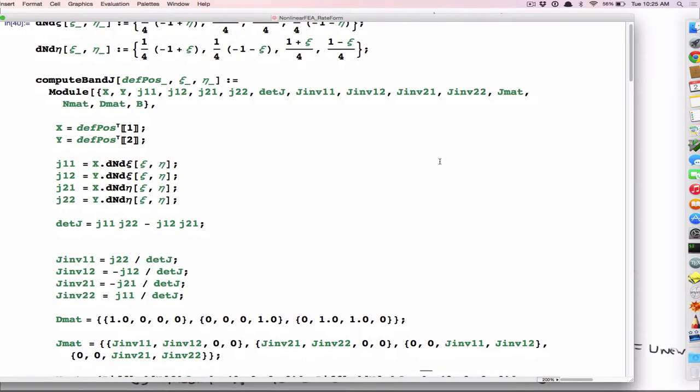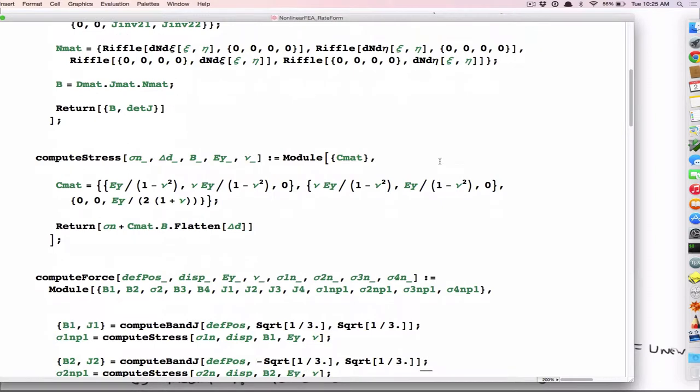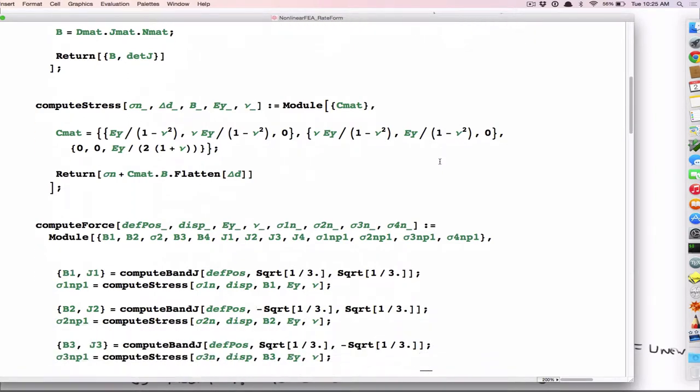So that's a function of xi and eta. And also, the deformed position. And I'll talk about that in a second, why I do that. So I solve for, I find the B matrix, strain displacement matrix, and the Jacobian determinant.